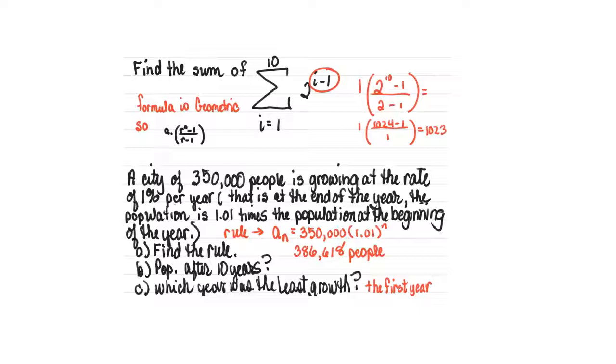Here's one where we're finding the sum of 10 terms starting with the first term when our rule is 2 to the power of i minus 1. Using our formula, a sub 1 is 1 because if you put 1 into the rule you get 2 to the power of 0, which equals 1. I'm going to multiply it by the ratio which is 2, to the 10th power, minus 1, over our ratio 2 minus 1. Therefore equals 1024 minus 1 over 1, for a total of 1023.